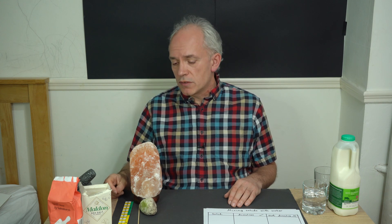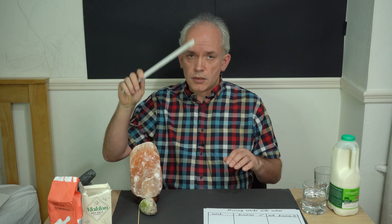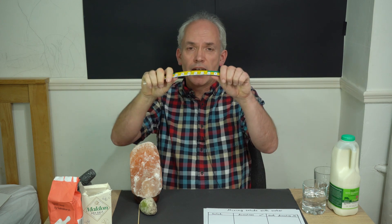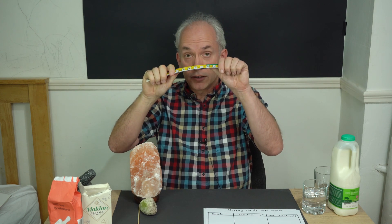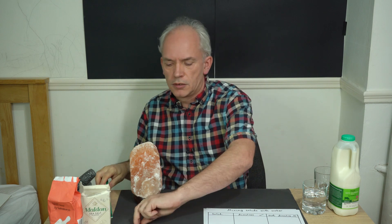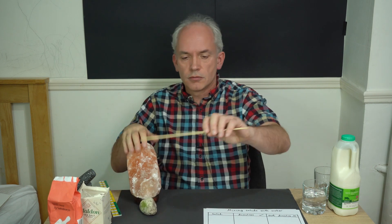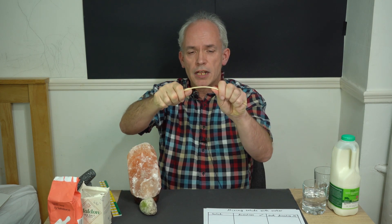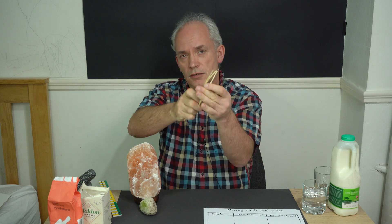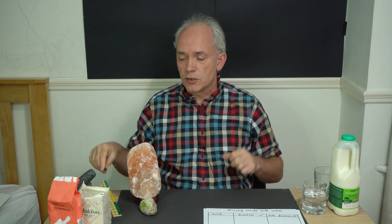Now a solid is something which you have to do something to it for it to change shape. So this ruler is a solid, I have to bend it for it to change shape, almost broke then. This stick, well I can bend it and it will break, but I have to do something to it.